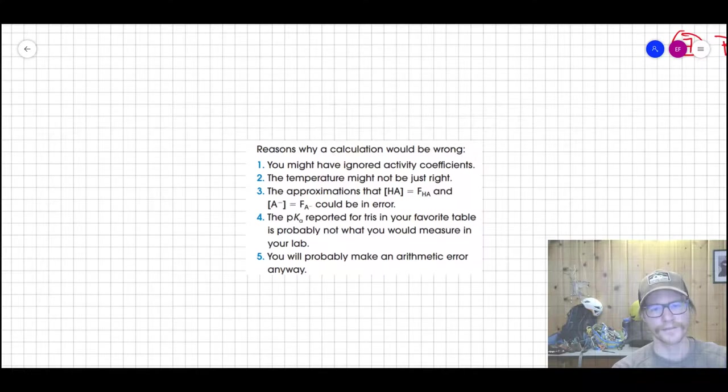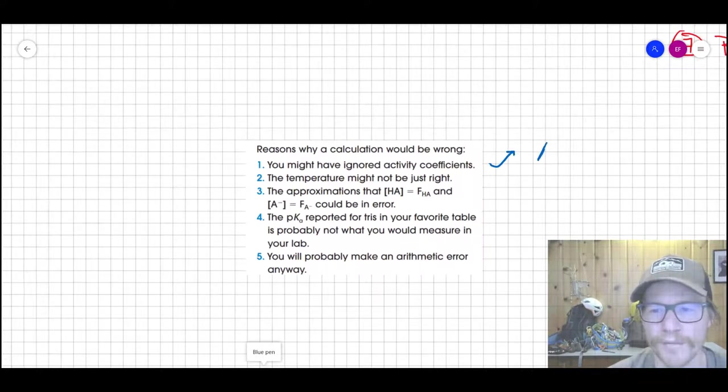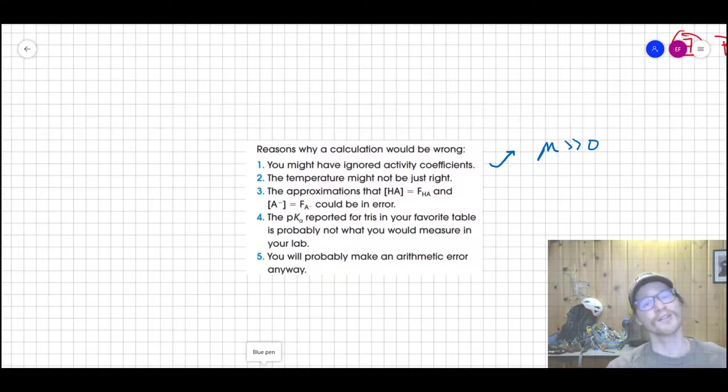Well, there's a few reasons. One, huge one, is that you might have ignored activity coefficients, and this is especially important when you have ionic strengths that are high. So when mu is much less than zero, that's a big deal because then the apparent concentrations of each of those species deviates from ideality quite a bit. They're much lower, and so the equilibriums all shift.